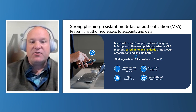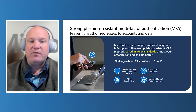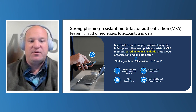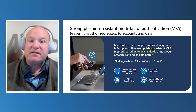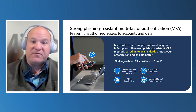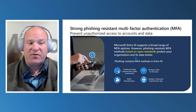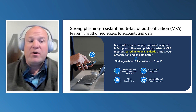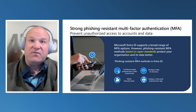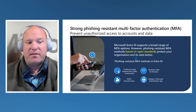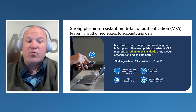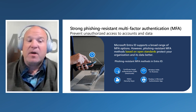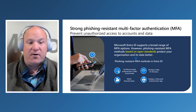In Microsoft Entra ID, we support four phishing-resistant authentication methods. They are certificate-based authentication, or commonly seen as smart cards or hardware devices that contain a certificate; Windows Hello for Business, the native-to-Windows operating system phishing-resistant authentication method; FIDO2 security keys; and recently announced passkeys in the Microsoft Authenticator app.